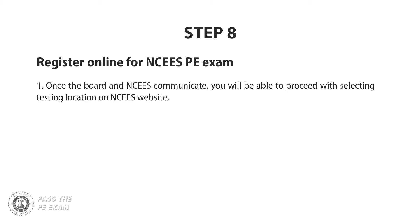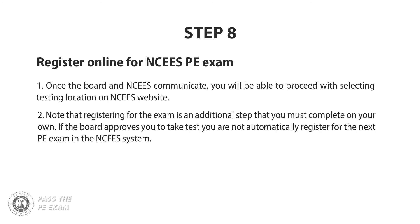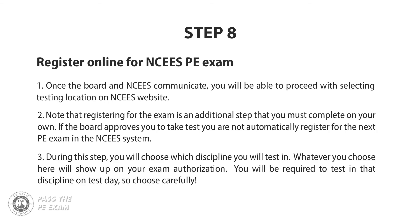Three very important things to note in this step. Number one: once the board and NCEES communicate, you will be able to proceed with selecting a testing location on the NCEES website. Number two: registering for the exam is an additional step you must complete on your own — if the board approves you, you are not automatically registered for the next PE exam in the NCEES system. Number three: during this step you will choose which discipline you will test in, and you will be required to test in that discipline on test day, so choose wisely.